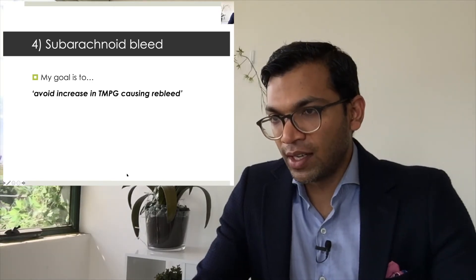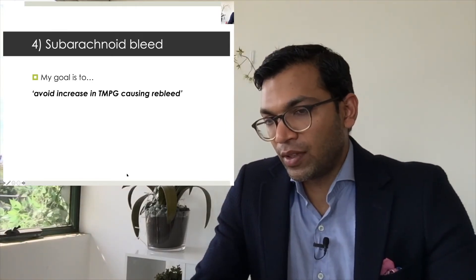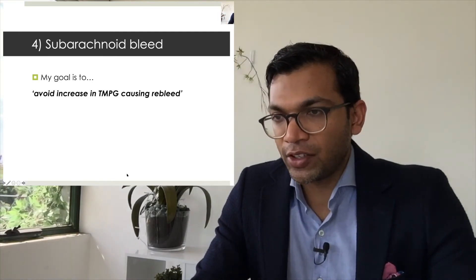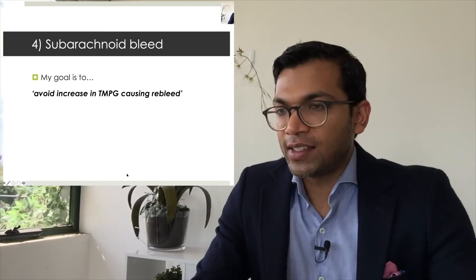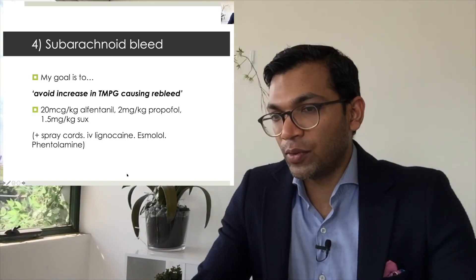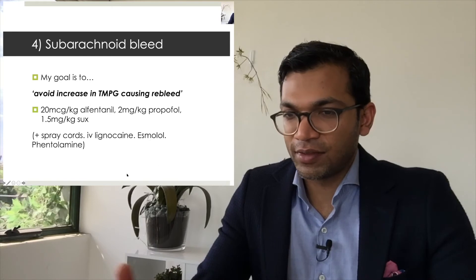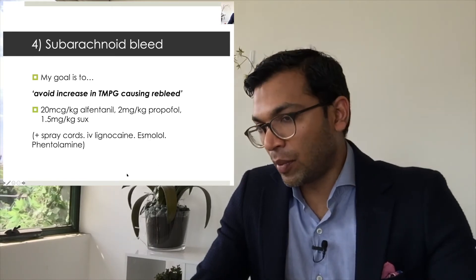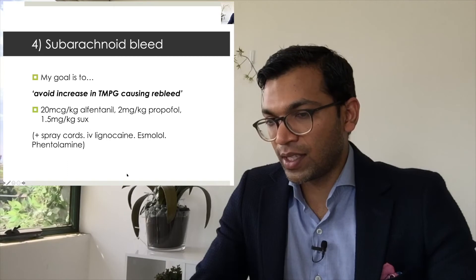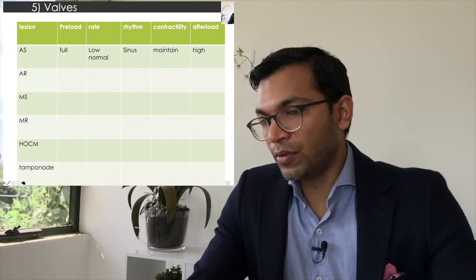I specifically focus on avoiding rebleed, because rebleed carries 50–70% mortality and can be triggered by a hypertensive episode causing increased transmural pressure gradient on induction. So everything I do primarily avoids hypertension, with cerebral perfusion secondary. You could use propofol-remifentanil TIVA, or higher-dose alfentanil plus propofol with suxamethonium, plus IV lignocaine or esmolol if there's a hypertensive episode. Stating your goals matters most.